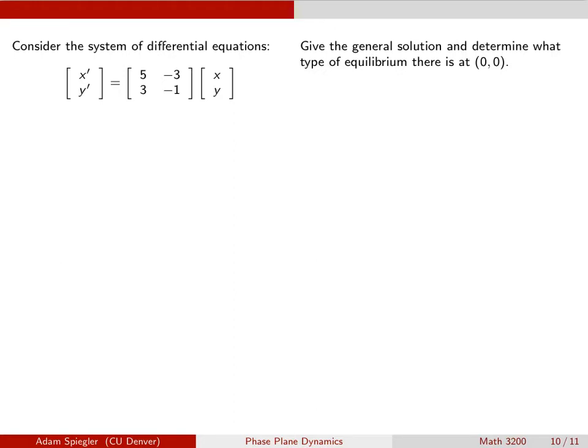It's worth pointing out here that when we have systems that look like x prime equals ax plus by and y prime equals cx plus dy, there's only one equilibrium, and it's going to be the origin.